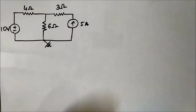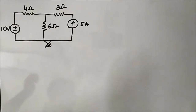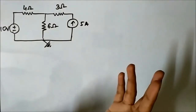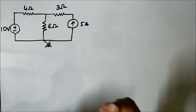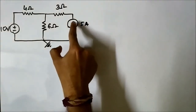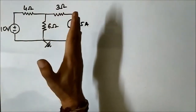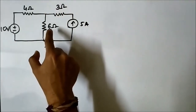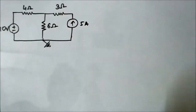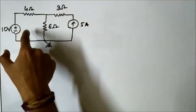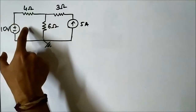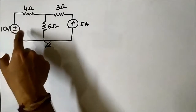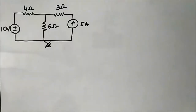We are now going to consider the Type 1 configuration of mesh analysis involving current sources. Here we have taken a simple circuit for analysis. By just looking at the circuit, you can make out that it is a Type 1 circuit, because this 5-ampere independent current source is located at one end. It belongs entirely to the second mesh — involving the 6-ohm, 3-ohm resistors and the 5-ampere source. It has no relationship with the first mesh.